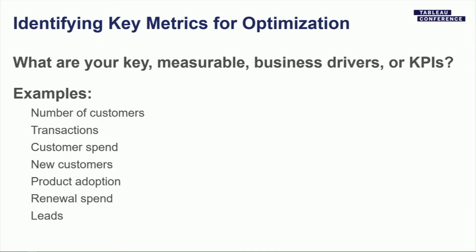As you're identifying key metrics for optimization, your line of business is going to be different — we can't apply a software sales model to every other business. Some things we look at: number of customers, transactions, spend, new customers, spend from new customers, product adoption. If you have a broad suite of product offerings or multiple lines of business, you may want to look at penetration within each line of business — for example, they may have lots of Office and Access licenses but you haven't sold them any cloud services. Renewal spend and leads are also important depending on your business model.